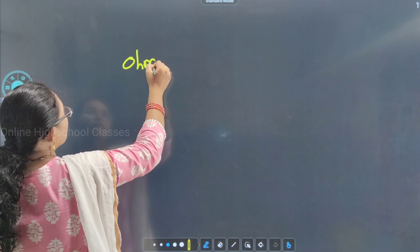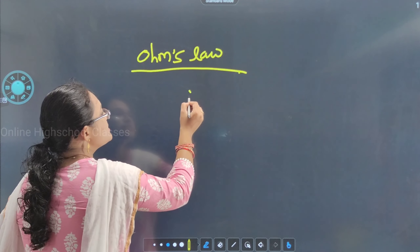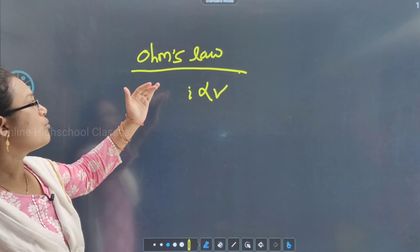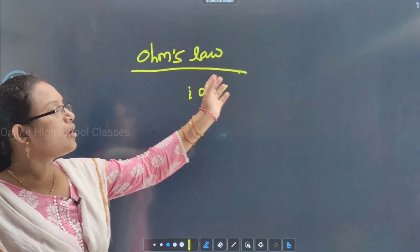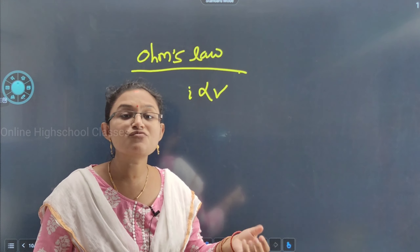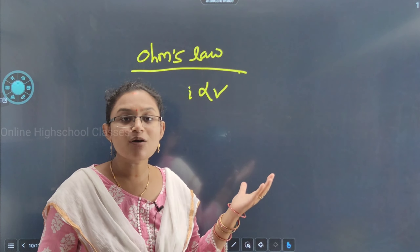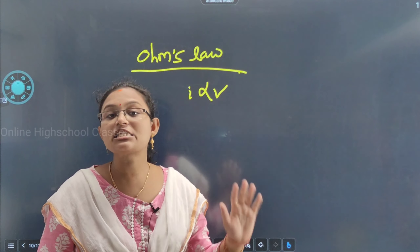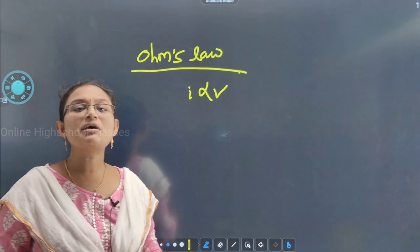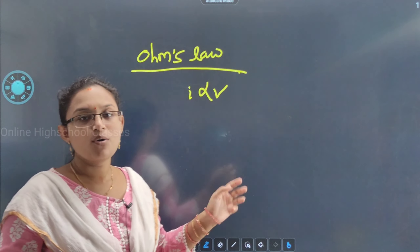Ohm's law states that I is directly proportional to V. That means current will increase whenever potential difference will increase. This is how we can experimentally prove Ohm's law.